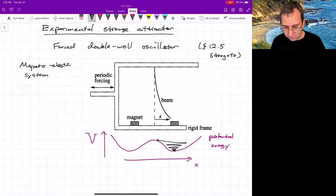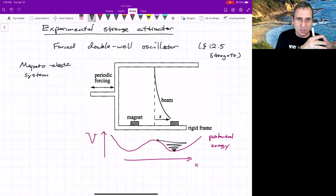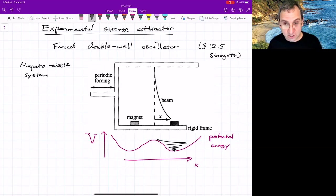Things get weirder if you take this entire frame and then shake it periodically, because then that shaking motion will sometimes make the beam move out to the other well, stay there for a while, maybe go back and forth between both wells. So they studied this, and they got a strange attractor.